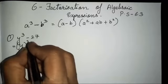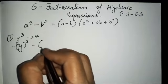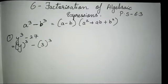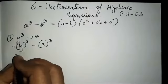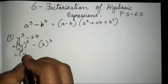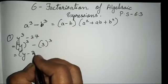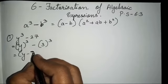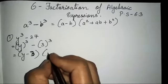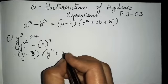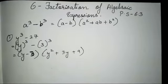Let's start with the first example. This is going to be your a. For b, you will have to convert it into a cube — 3's cube is supposed to be 27, so b is going to be 3. Therefore, a square means y square plus 3y plus 9.